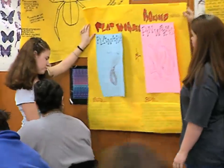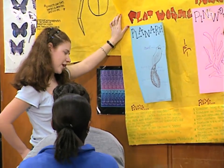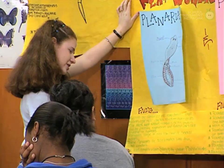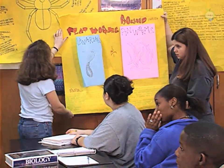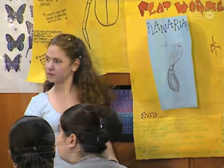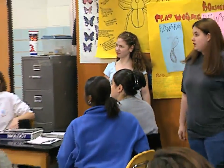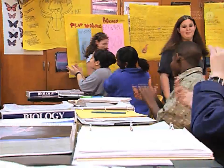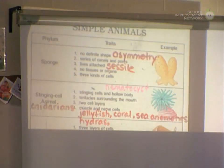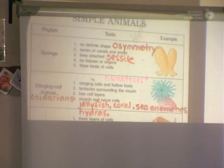These flatworms are acoelomates — let's hear the class say that: acoelomates. Good job! Give them a round of applause. Thank you very much. So let's talk about our flatworms and remember the chart we started making describing our different animals.